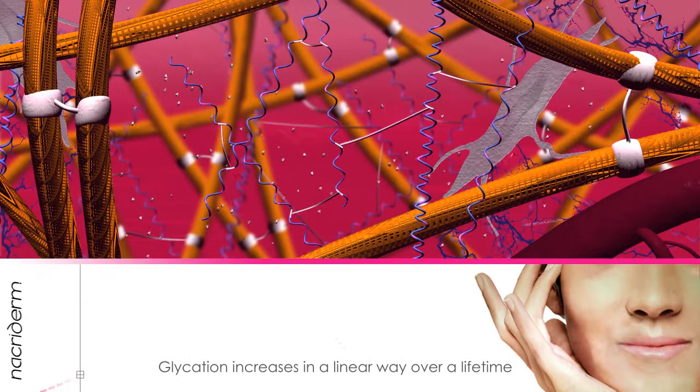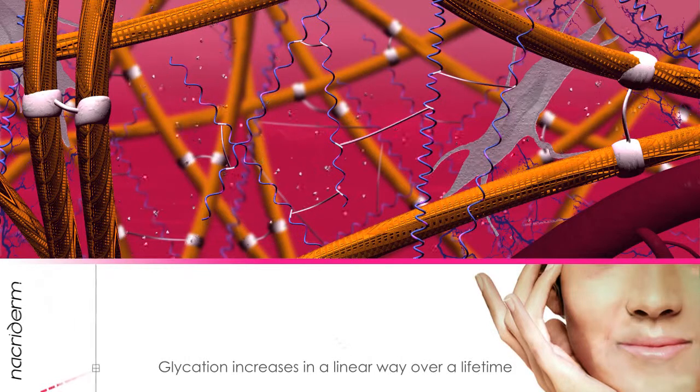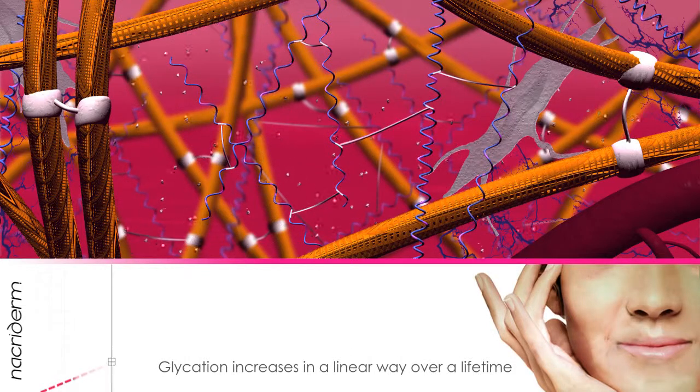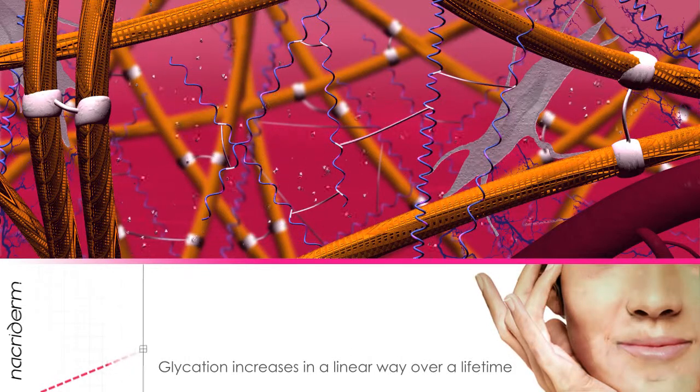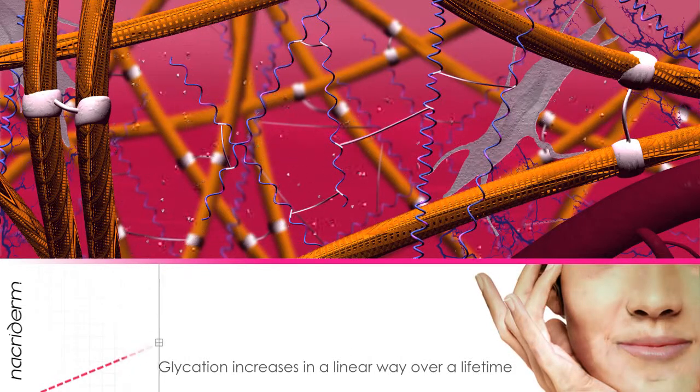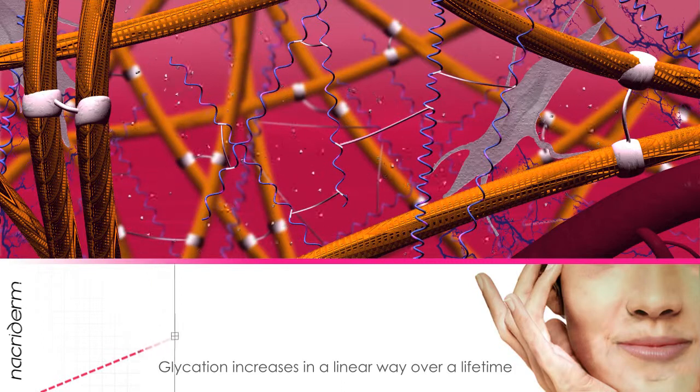Glycation increases in a linear way over a lifetime, sometimes more rapidly in certain people who make up a high-risk population.